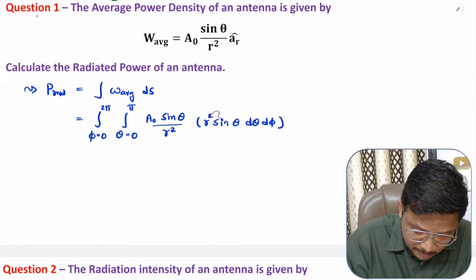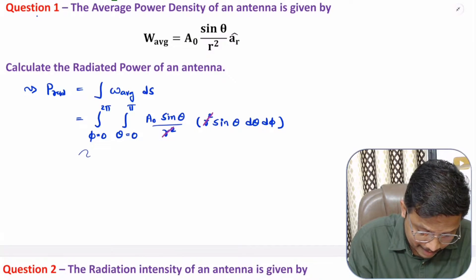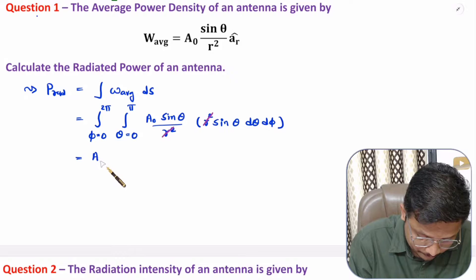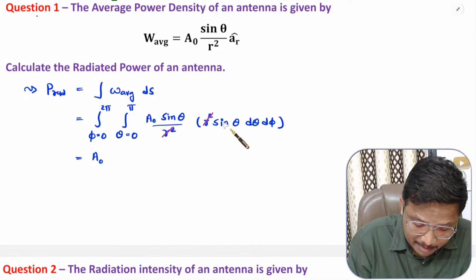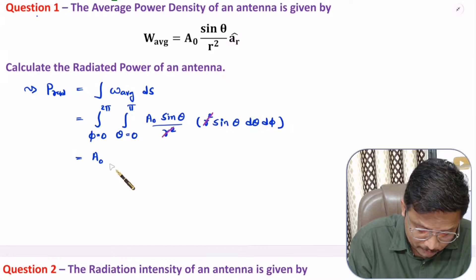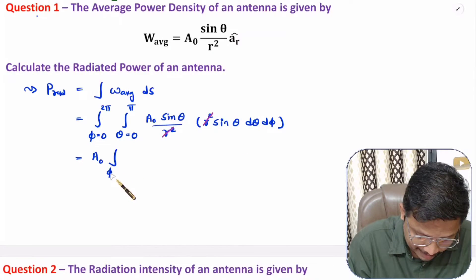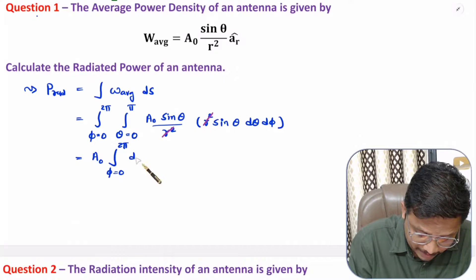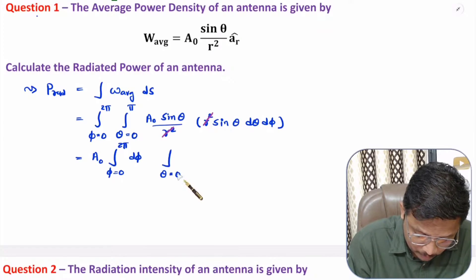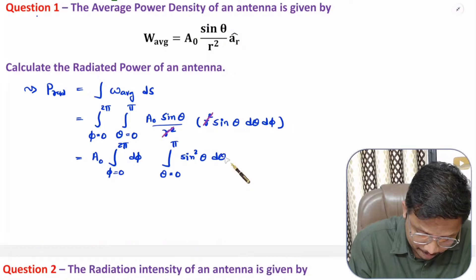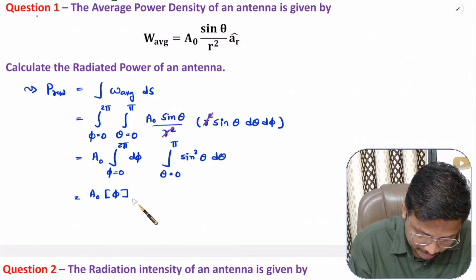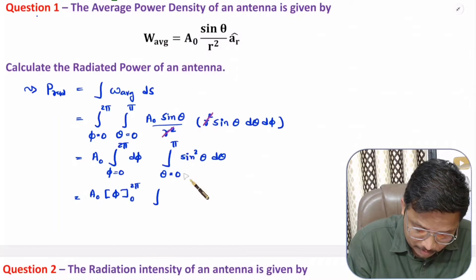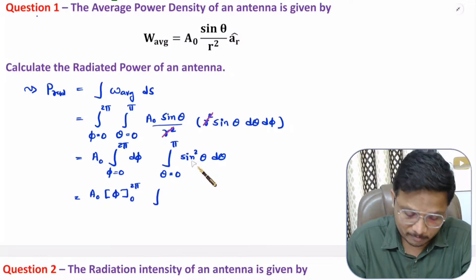Now, r² and r² get cancelled, and the constant a₀ comes outside. Since theta and phi are independent in this function, we can do the integrations separately. Phi varies from 0 to 2π with nothing else in the phi function, giving just dφ. For theta, varying from 0 to π, we have sin²θ·dθ. The integration of 1 with respect to phi, with limits 0 to 2π, gives 2π. However, direct integration of sin²θ is not possible as-is.